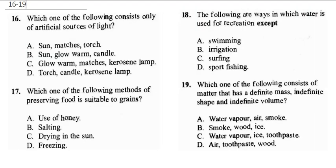Question 16 says: which one of the following consists of artificial sources of light? The sun is a natural source of light, so option B is out. Matches and kerosene lamps are artificial, but a glow worm is a natural source of light. A torch is made by man — artificial. A candle is made by man — artificial. Kerosene lamp is made by man. So the correct answer is D.